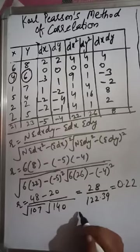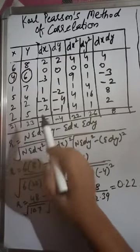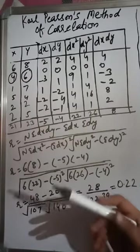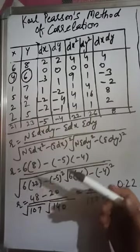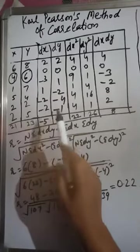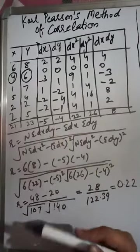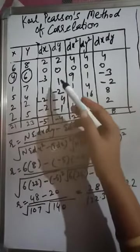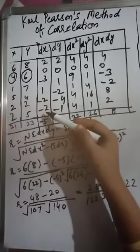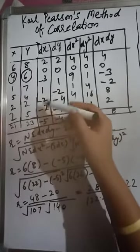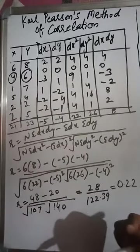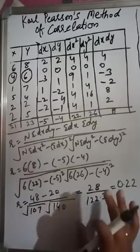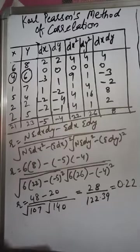Now, if there is a common factor in both dx and dy deviations, we proceed with the step deviation method. If there is no common factor in either dx or dy, then we cannot use step deviation. In this particular example, there is no common factor in dx or dy, so this example cannot be solved using the step deviation formula.